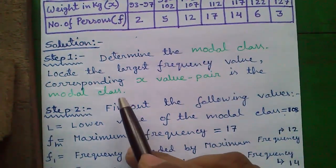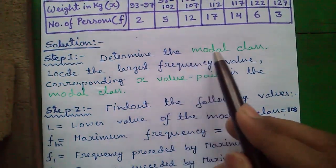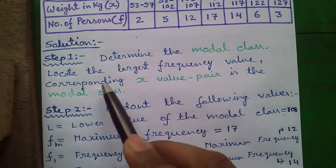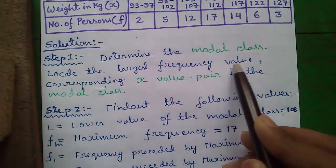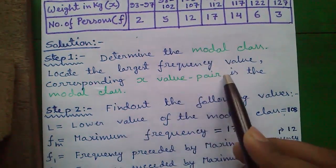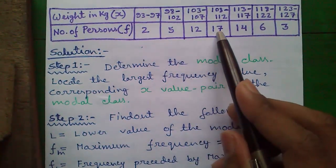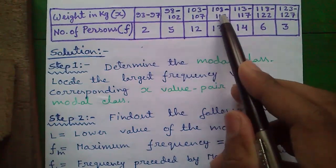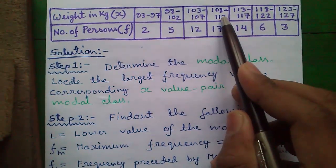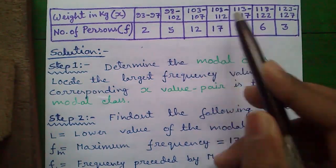Next, proceed to our solution. Step 1: Determine the modal class. For that, locate the largest frequency value. The corresponding x value pair is the modal class. So our largest frequency value is 17, and the corresponding x value pair 108-112 is our modal class.